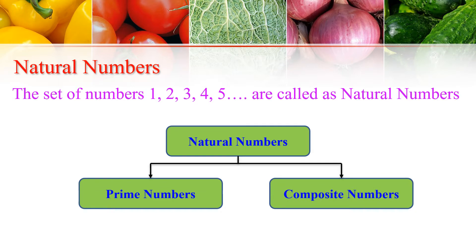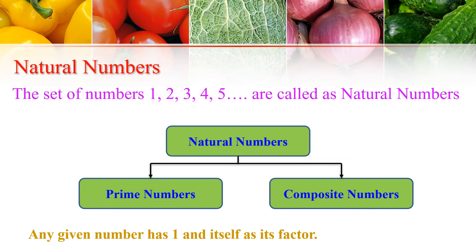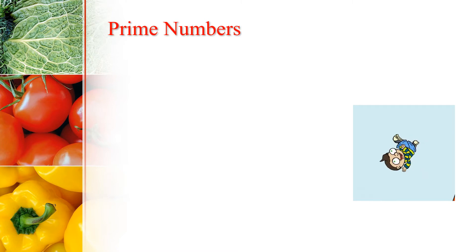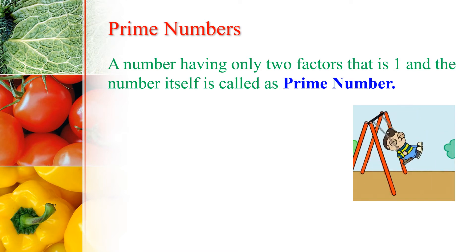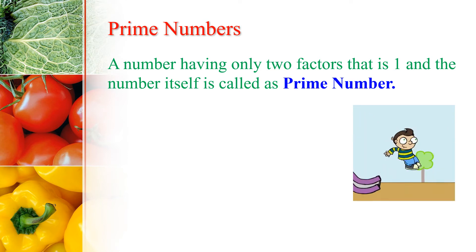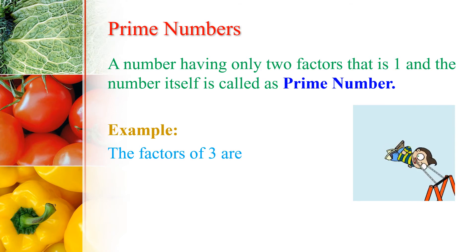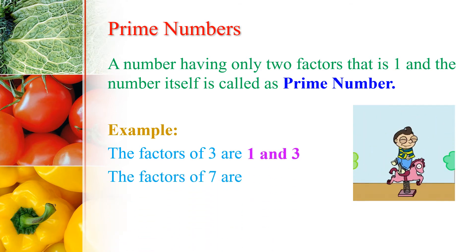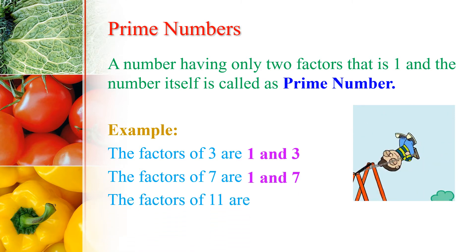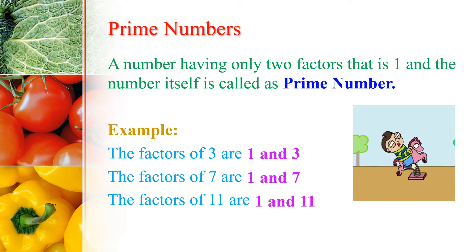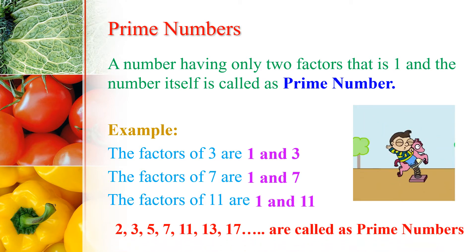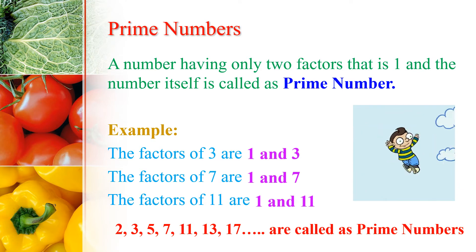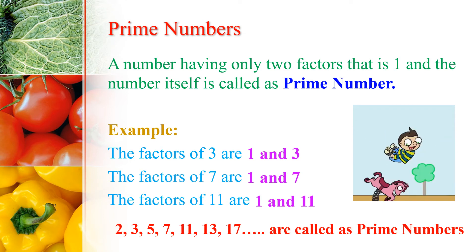Before we proceed, remember that any given number will always have 1 and itself as its factor. A number having only two factors — that is 1 and the number itself — is called a Prime Number. For example, factors of 3 are 1 and 3; factors of 7 are 1 and 7; factors of 11 are 1 and 11. Therefore, 3, 7, and 11 are Prime Numbers. In general, 2, 3, 5, 7, 11, 13, 17, etc. are called Prime Numbers.